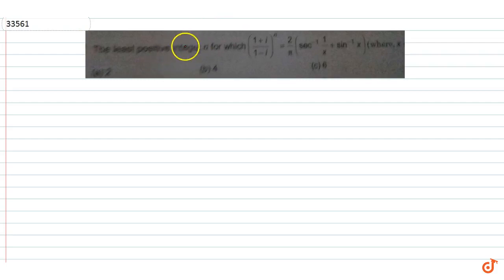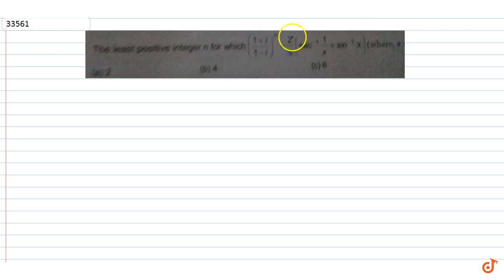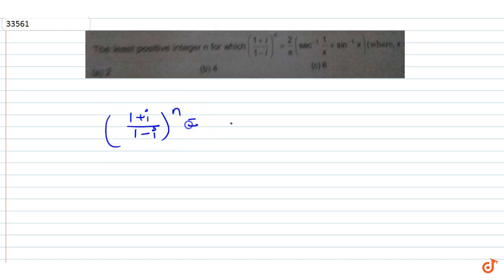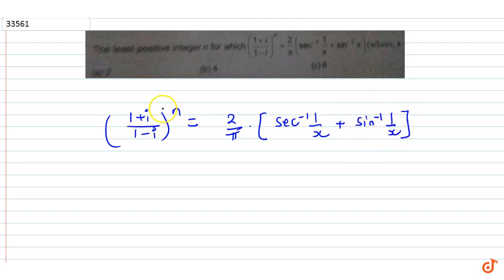We need to find the least positive integer n for which this equation is satisfied. The equation is given: (1 + iota) / (1 - iota) whole power n equals 2/π times sec⁻¹(1/x) plus sin⁻¹(x). We have to find the minimum positive integer value of n for which this equation holds.